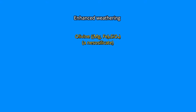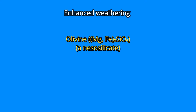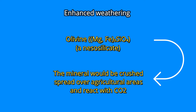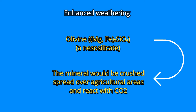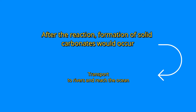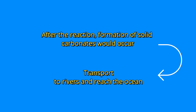In the enhanced weathering method, one possibility is to use olivine, a nesosilicate mineral. In this method, the mineral would be crushed, spread over agricultural areas, and react with atmospheric carbon dioxide. After the reaction, the formation of solid carbonates would occur. From the soil, the material would be transported to rivers and reach the ocean, where it would be stored.